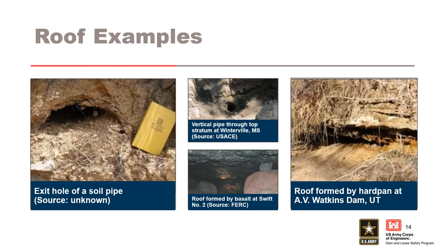Examples of roofing are shown in the following photographs. In the upper left, an exit hole of a soil pipe is shown. In the bottom left, a test pit was excavated to investigate a boil showing a vertical pipe through the top stratum at Winterville, Mississippi. In the upper right, alluvial material below basalt bedrock in the forebay's foundation was piped, connecting the forebay through lava flow tubes and penetrating the forebay blanket to create a sinkhole. Sudden high uplift pressures on the base of the basalt caused collapse and fracturing of the basalt foundation, leading to increased flow and eventual breach of SWIFT No. 2. In the lower right, hardpan layers shown in the overhang formed the roof at A.V. Watkins Dam, where fine sand was piped and deposited in the south drain.